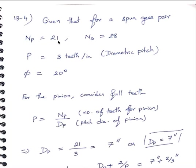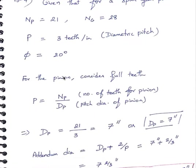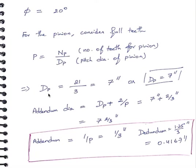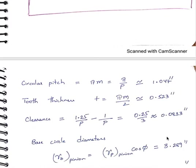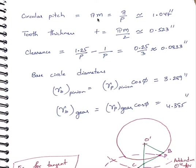NP is 21, NG is 28, diametric pitch is 3 teeth per inch, and pressure angle is 20 degrees. The pitch circle diameter for the pinion is 7 inches. Addendum equals 1 divided by the diametric pitch, so addendum equals 1/3 inch. Dedendum equals 1.25 divided by the diametric pitch, giving 0.4167 inch. Addendum and dedendum are the same for both mating gears. Circular pitch equals π divided by the diametric pitch, coming out to approximately 1.047 inches.